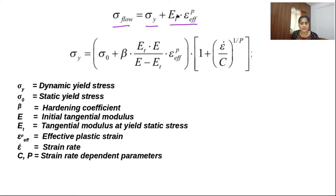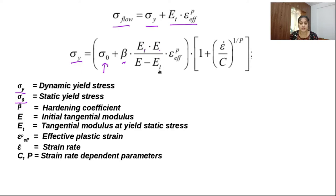And this is the product of tangential modulus and effective plastic strain. What is the dynamic yield stress? That equals sigma naught, which is static yield stress. Sigma y is dynamic yield stress and sigma naught is static yield stress. Beta is the hardening coefficient. And this is the tangential modulus. This is the initial tangential modulus, which is also called Young's modulus of elasticity. And this is the subtraction of Young's modulus of elasticity and tangential modulus. And this is effective plastic strain.